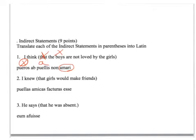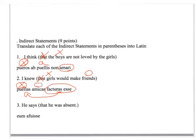'I knew that the girls would make friends.' Again, don't translate 'that.' The subject is girls, and the subject of an indirect statement is in the accusative. 'Would make friends' is the future active infinitive, so I use the future active infinitive. Notice the ending agrees with the subject. Friends is the object, and it's in the accusative as normal.